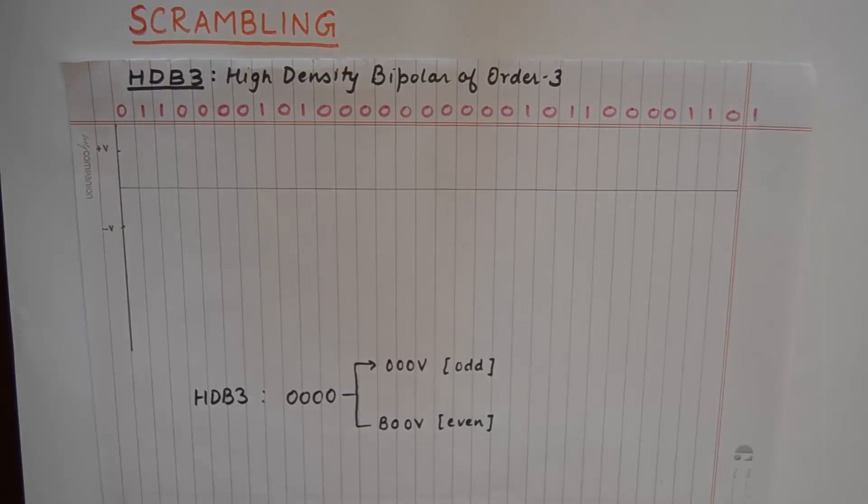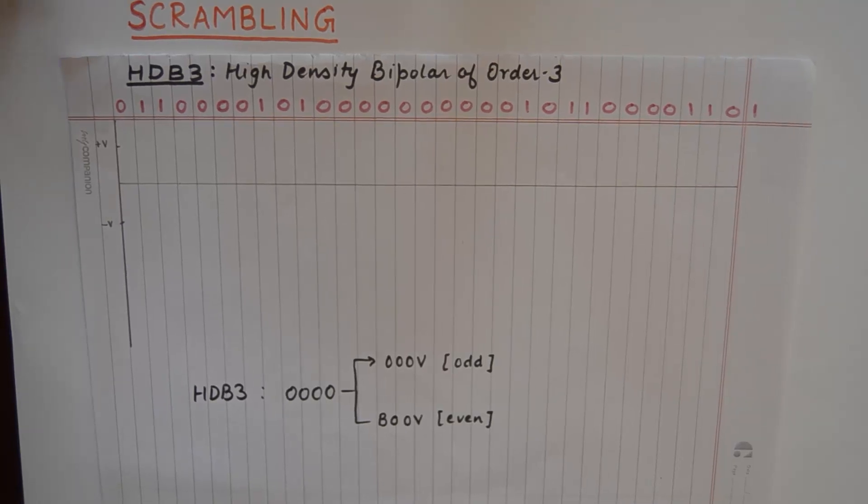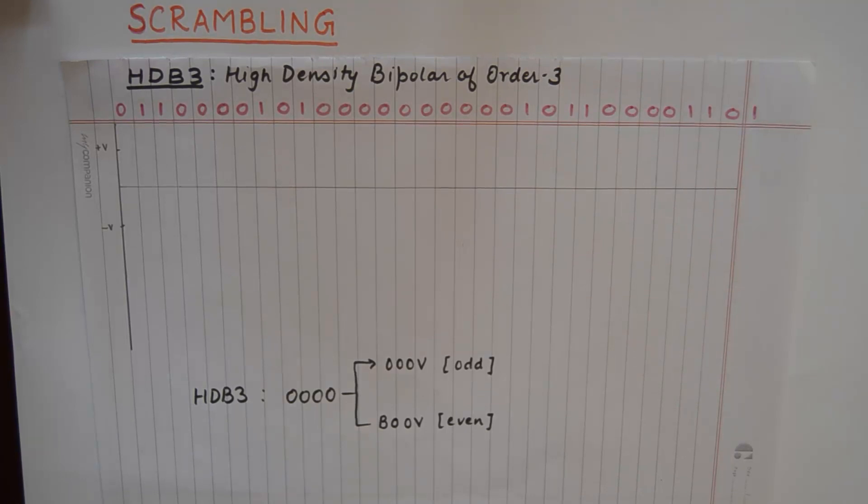Hello friends, welcome to another tutorial in information theory and coding. In today's tutorial we'll talk about HDB3, which is a kind of line coding technique but it is based upon AMI. Now the reason why we use HDB3 and how is it different from AMI, we're going to discuss all that in this tutorial.